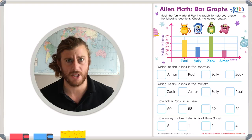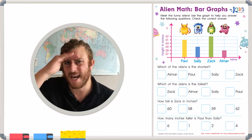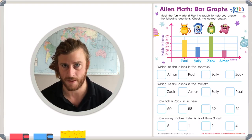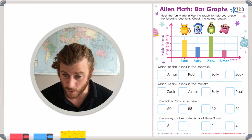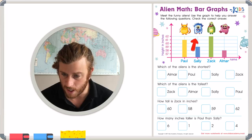The first thing I like to do when I see a bar graph is just take a look at it and notice some things. So the first thing I notice of course are the aliens' names on the bottom and the really cool aliens that go along with them on top.